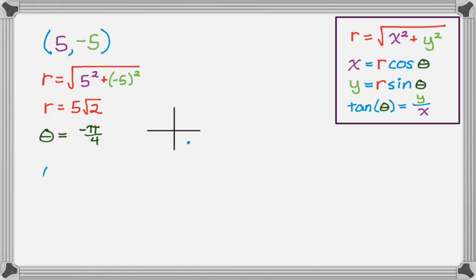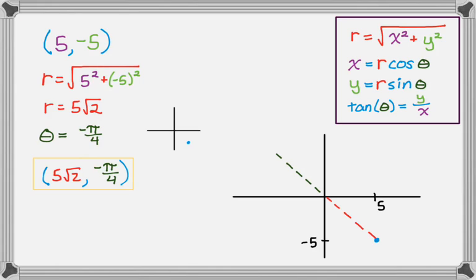Ordered pairs in polar are always written R comma theta, which is a little odd because theta is really the independent variable and R is the dependent variable, but they're in alphabetical order. One way of writing this ordered pair is (5√2, -π/4). But I could have rotated 7π/4 instead, so another valid representation is (5√2, 7π/4).